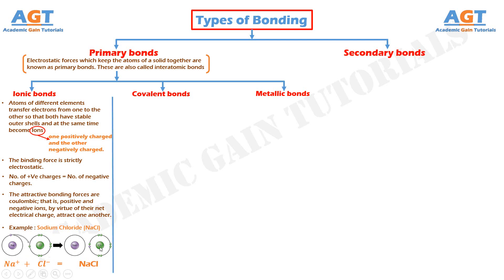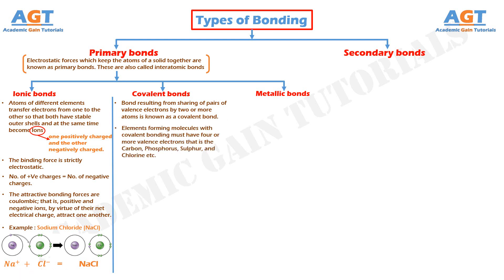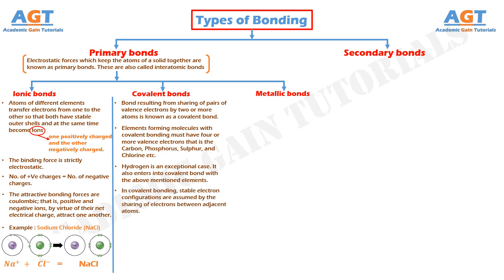Covalent bonds. The type of bond resulting from sharing of pairs of valence electrons by two or more atoms is known as a covalent bond. Elements that form molecules with covalent bonding include those with four or more valence electrons — that is the carbon, phosphorus, sulfur, and chlorine families. Hydrogen is an exceptional case; it also enters into covalent bonds with the above mentioned elements. In covalent bonding, stable electron configurations are assumed by the sharing of electrons between adjacent atoms.